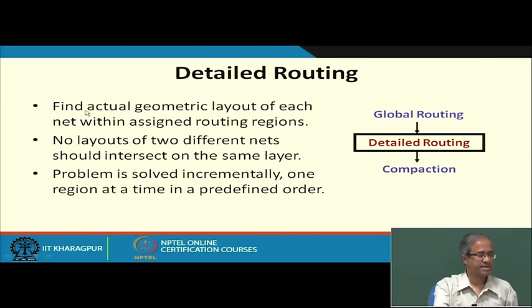Here we continue our discussion on routing from the last few lectures. We talked about area or grid routing where we connect two points on a two-dimensional grid in the presence of obstacles. We also talked about global routing where, once blocks are placed and channels and routing regions are defined, for every net we find the approximate sequence of routing regions to traverse. Once this is done, we take every routing region one at a time to complete the exact interconnection patterns.